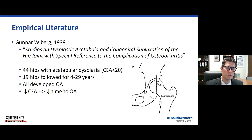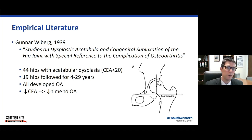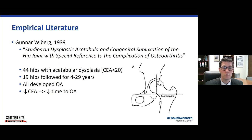Importantly, his next step was to identify patients he deemed to have dysplasia — those with a narrow center edge angle or narrow hip coverage of less than 20 degrees. He followed those patients for up to 30 years and found that all of them went on to develop osteoarthritis. The time it took to develop osteoarthritis was directly related to the center edge angle: the more dysplastic, the faster they developed arthritis.